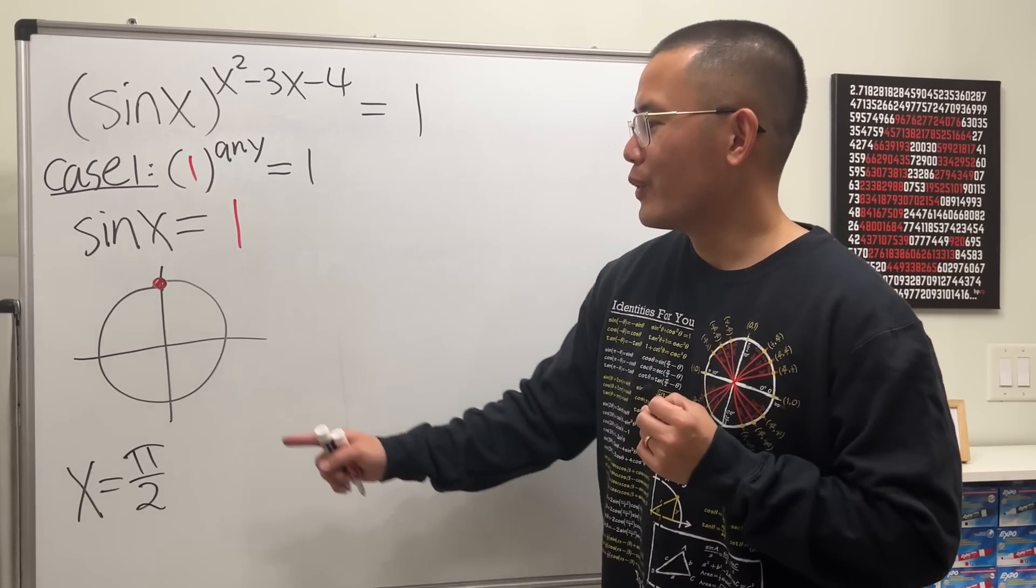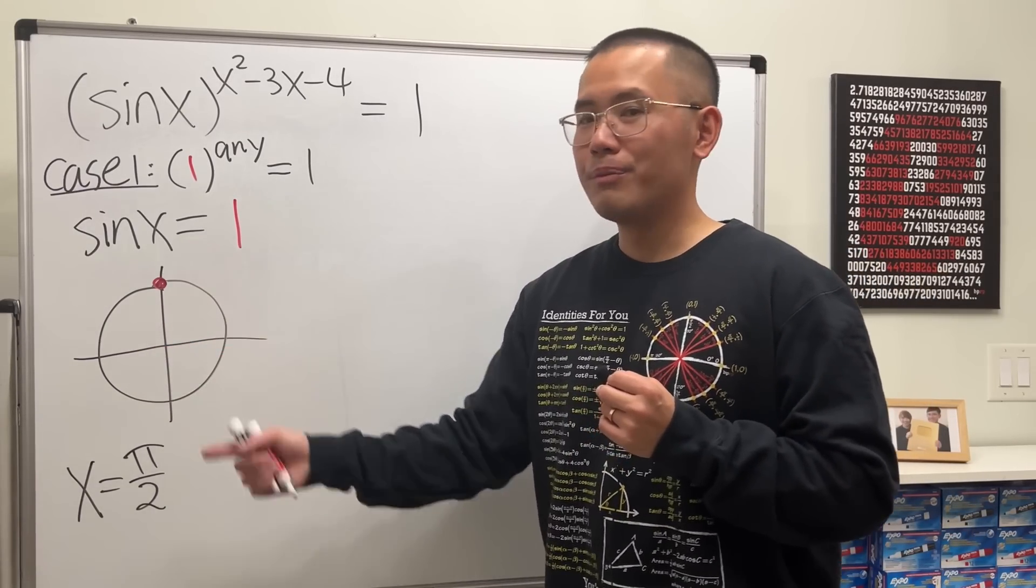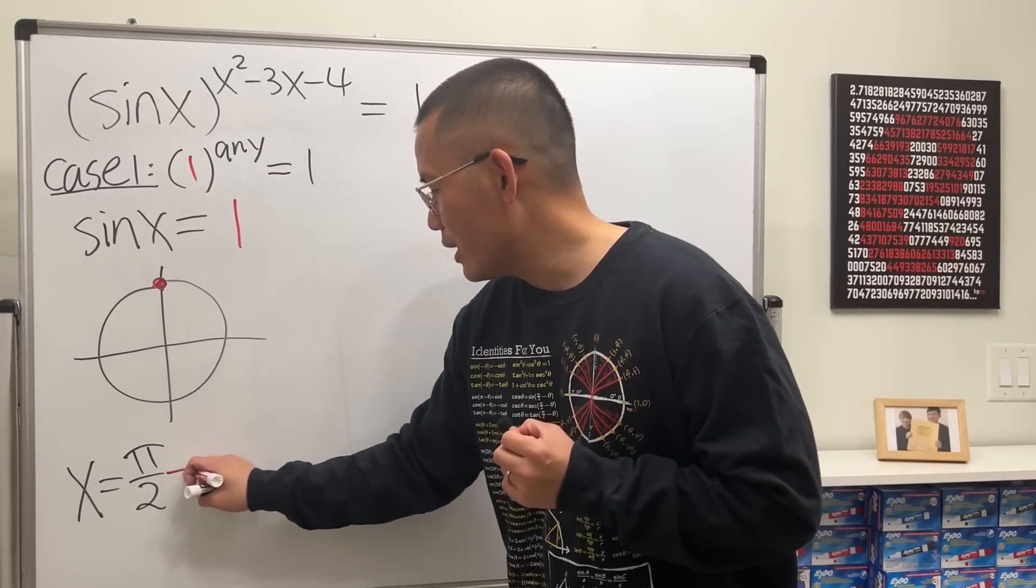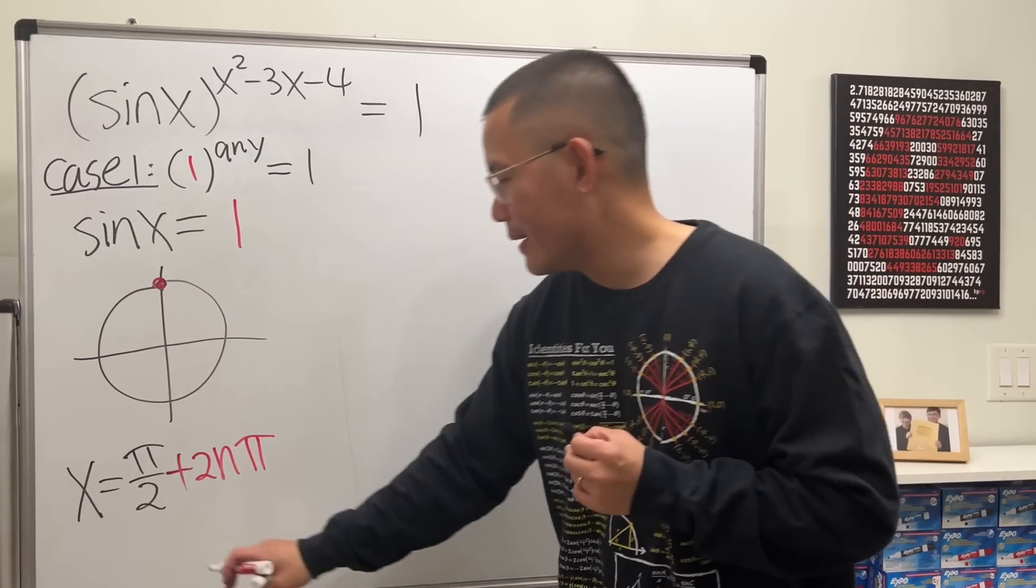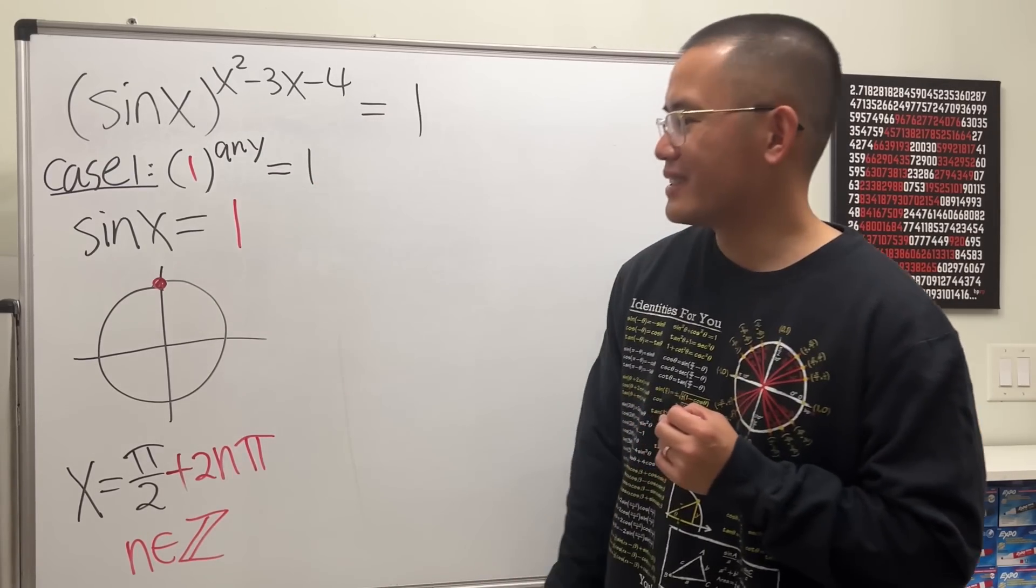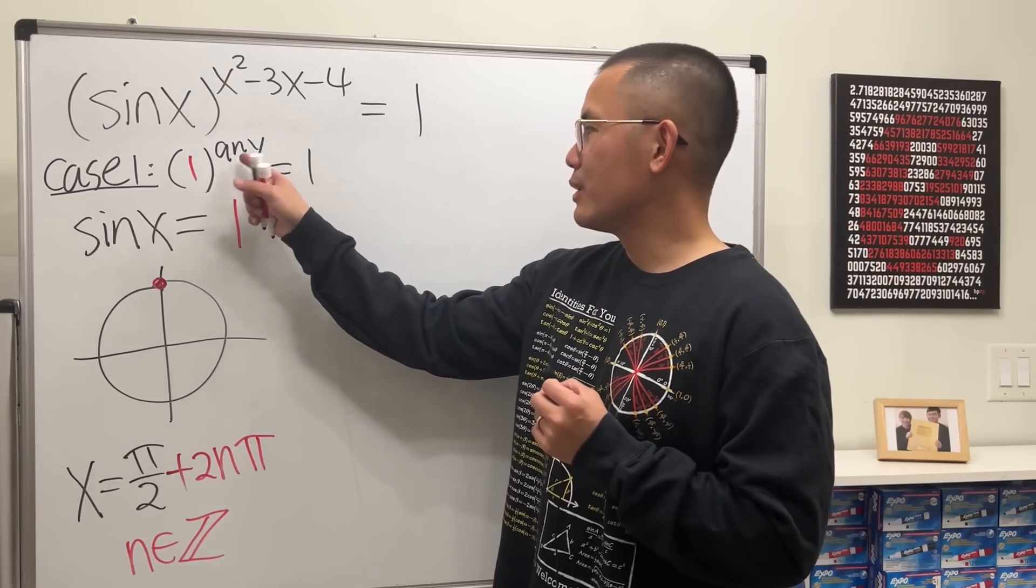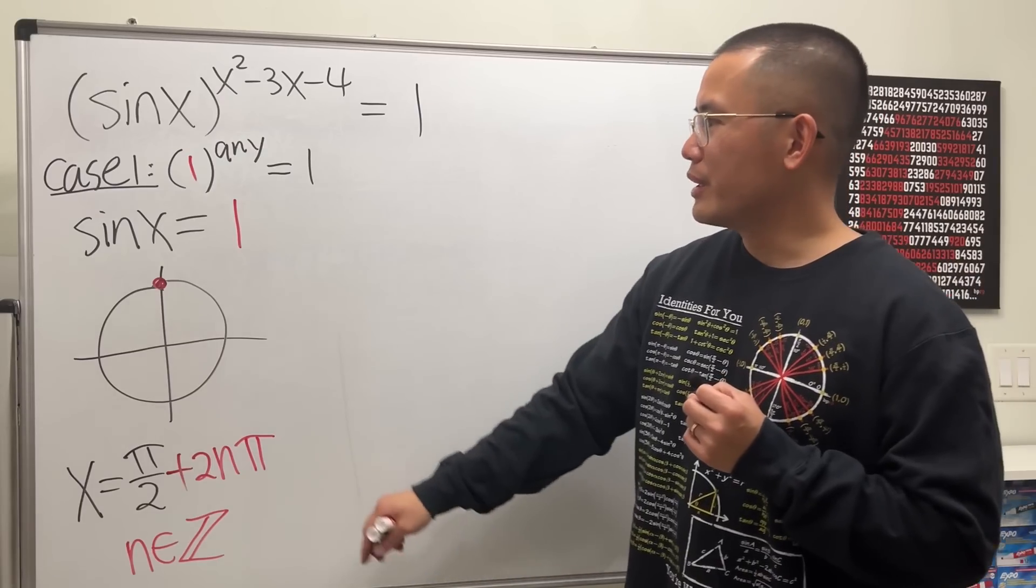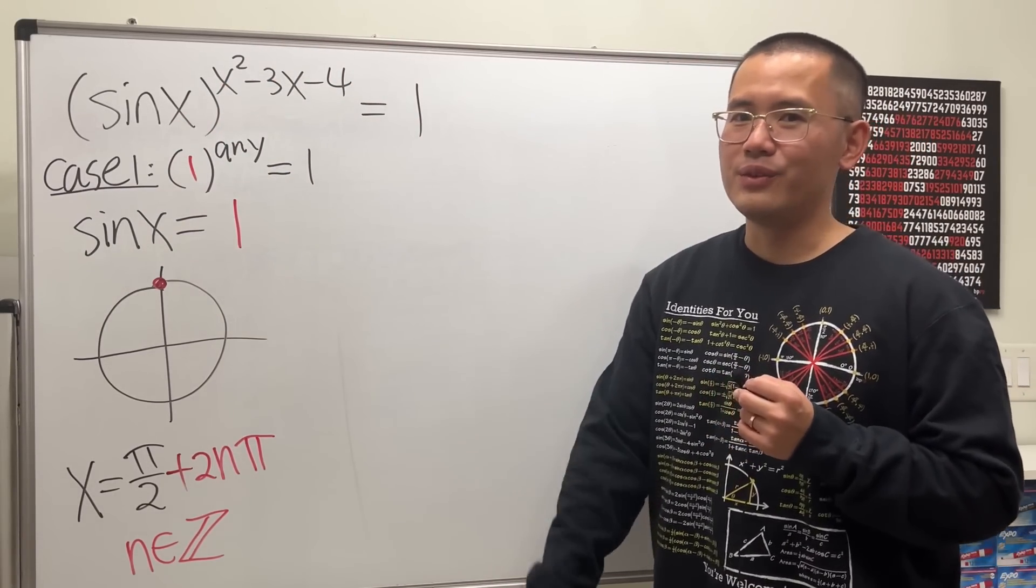But truth to be told, we can keep rotating, right? 2π or going back 2π. So to get all the solutions, we add 2nπ. Let's denote that n is an integer. So this right here completes case 1. It doesn't really matter what the power is. You can have 1 to the π squared whatever power, it will still give you 1.